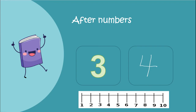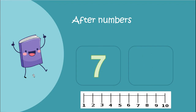Are you getting what after numbers are? Now let's do 7. What number comes after 7? We look at 7 here — what number comes after? The number that comes after 7 is 8. So 8 comes after 7 — it's the next number: 7, 8. Good.